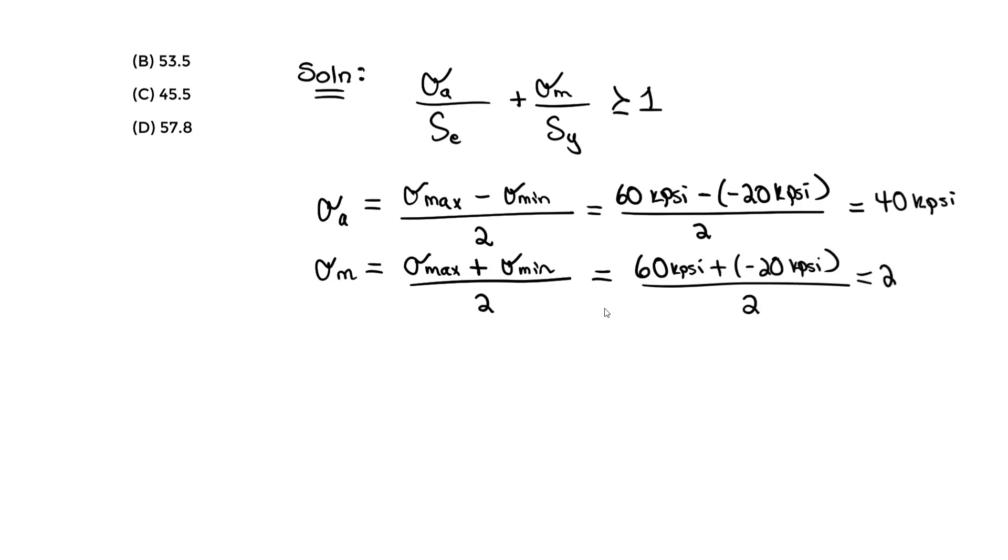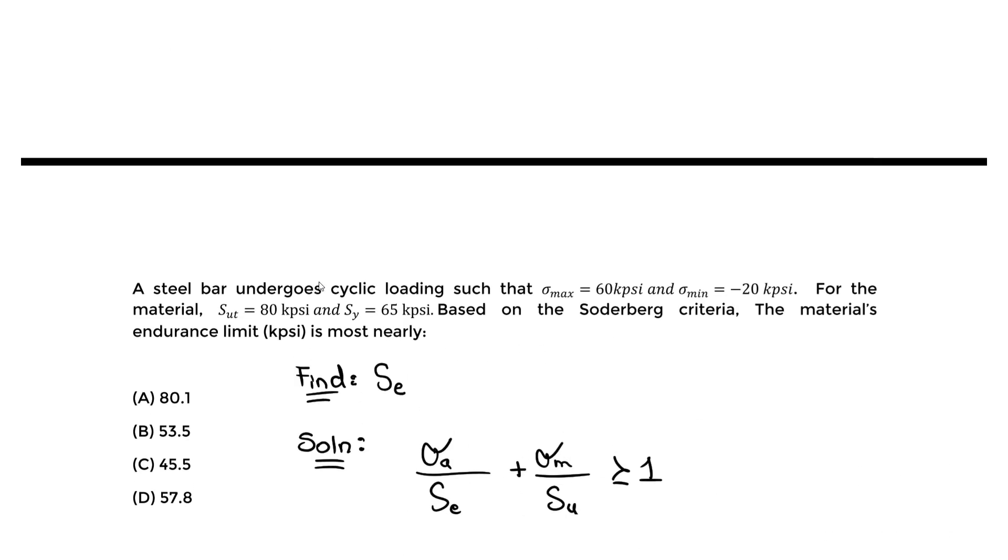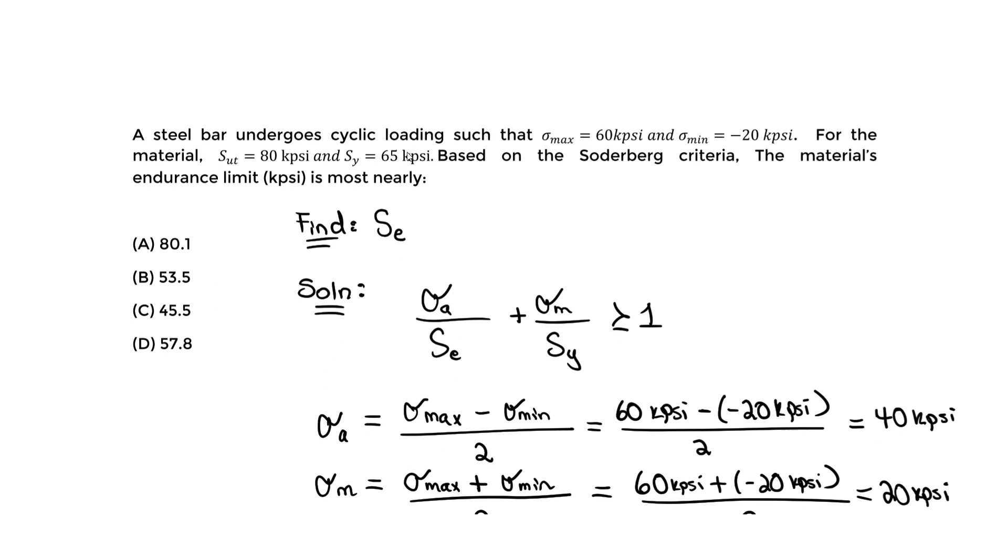Now we have our alternating and mean values, and we apply that equation. The alternating is 40 kpsi divided by SE, plus the mean, which is 20 kpsi, divided by S_y.